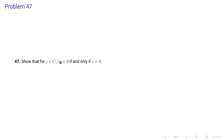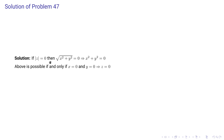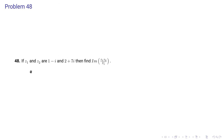Problem 47: Show that for z a complex number, |z| = 0 if and only if z = 0. If |z| = 0, then √(x^2 + y^2) = 0 where z = x + iy. Squaring gives x^2 + y^2 = 0, which is only possible if both x = 0 and y = 0, implying z = 0.